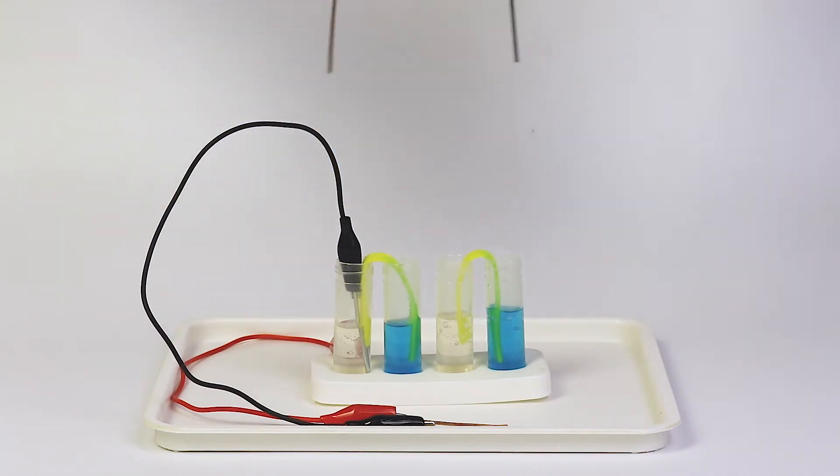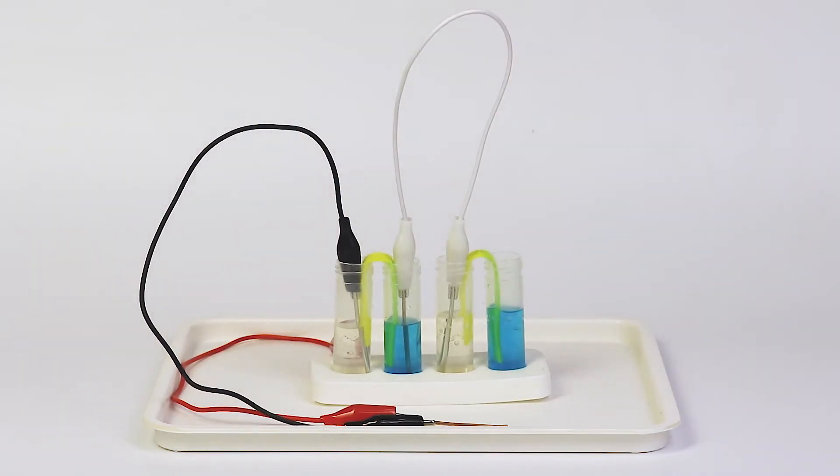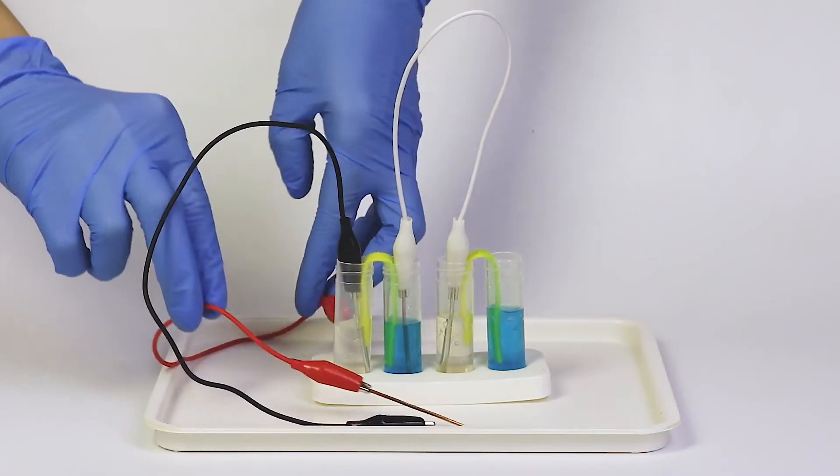copper into the second vial, and zinc into the third. Finally, insert the copper piece on the red wire into the fourth vial.